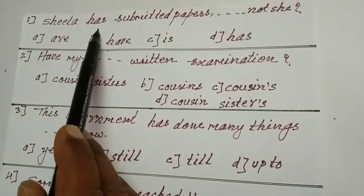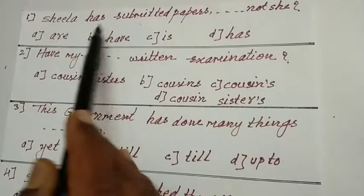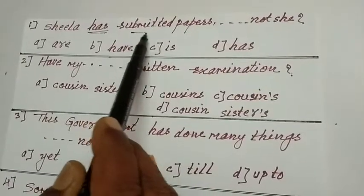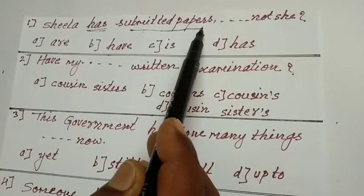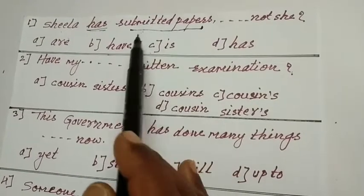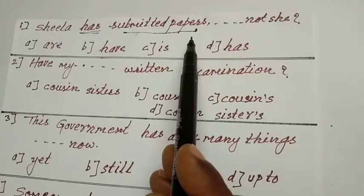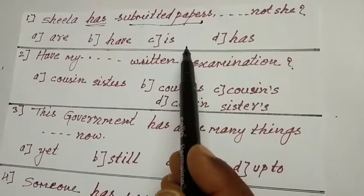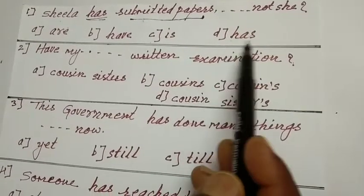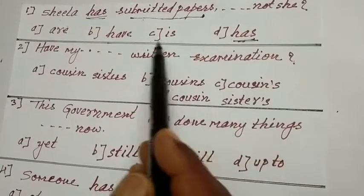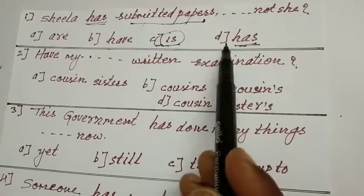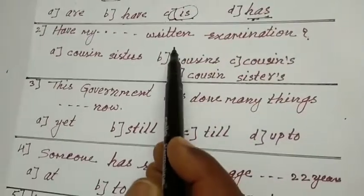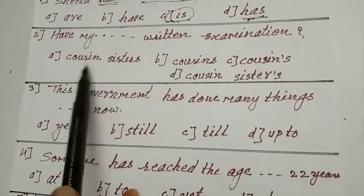Sheila has submitted papers. It is a question tag. Sheila has submitted papers, dash not she? Has not she? Here E is wrong. This is not she? And D is your answer. Next, come to the second one.